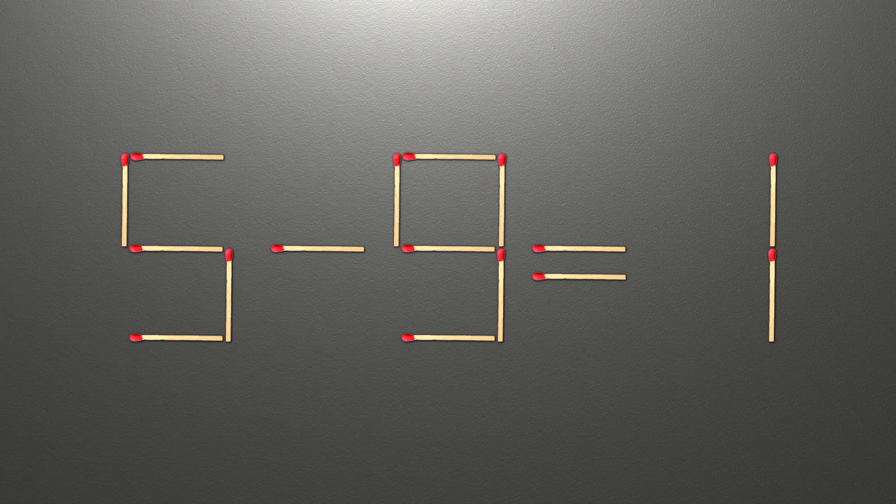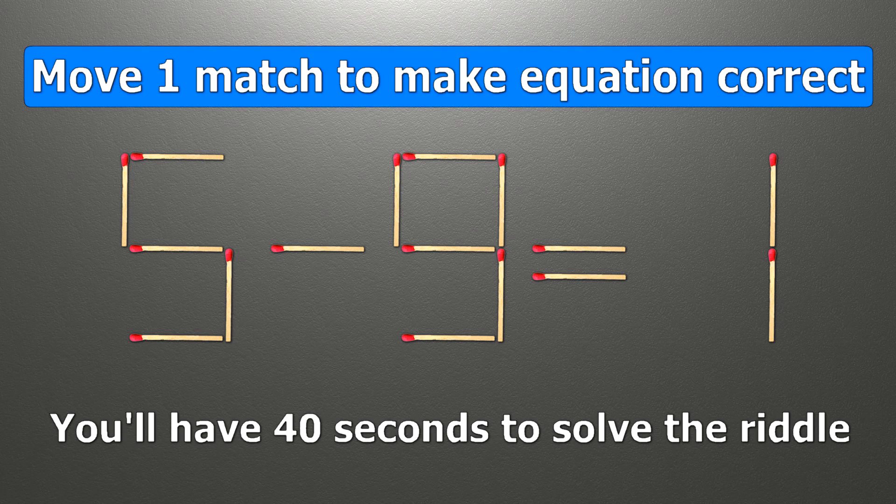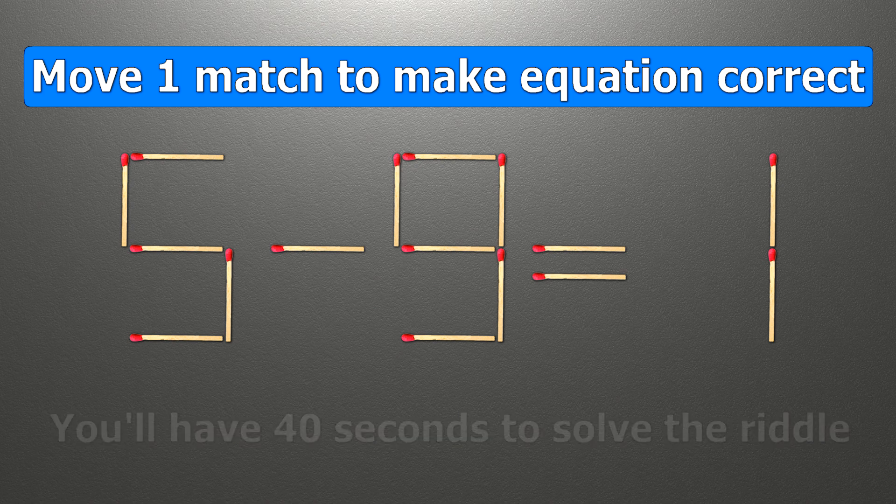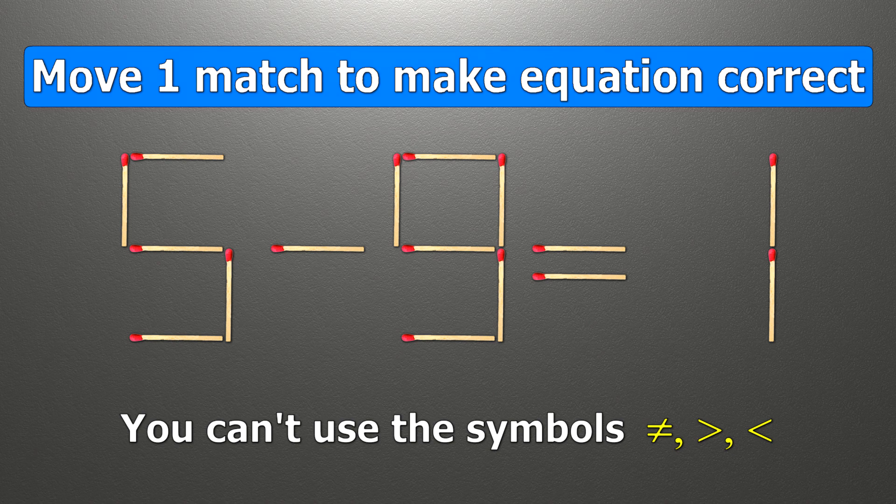Hello! We have the equality 5 minus 9 equals 1. Our equality is wrong. We need to move one match to make our equality correct.